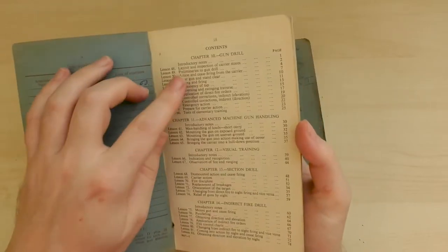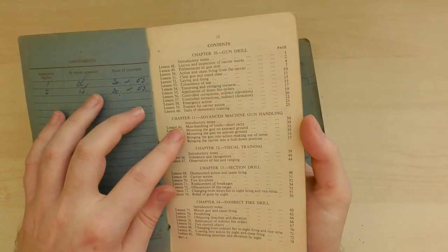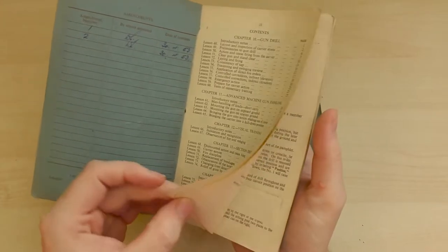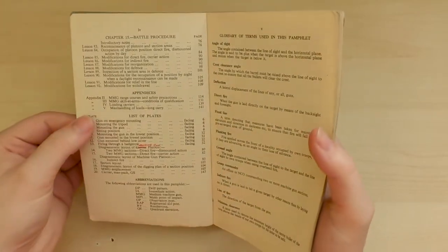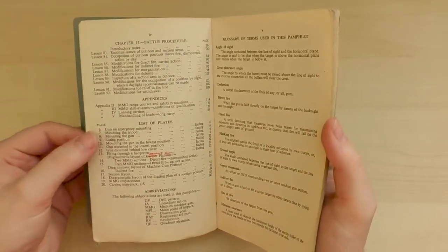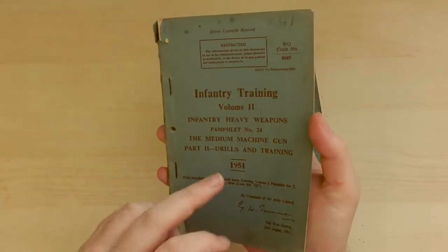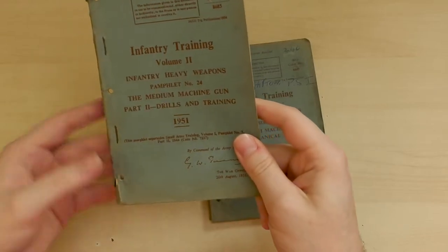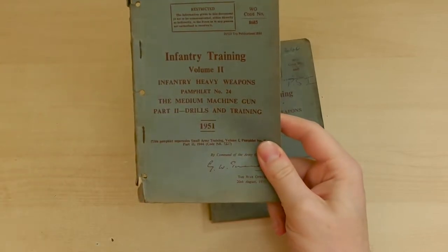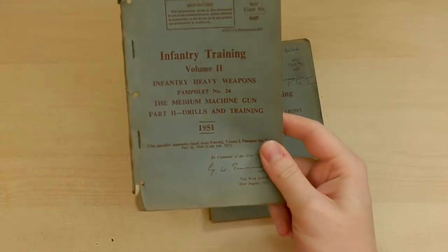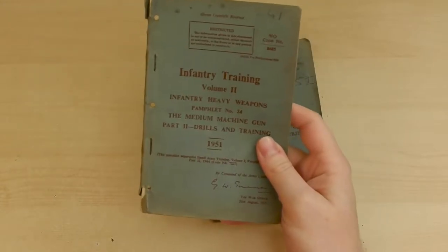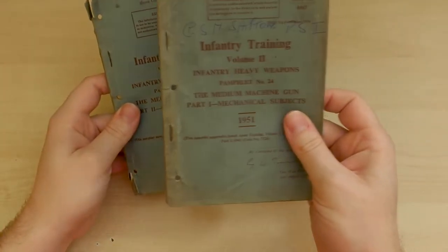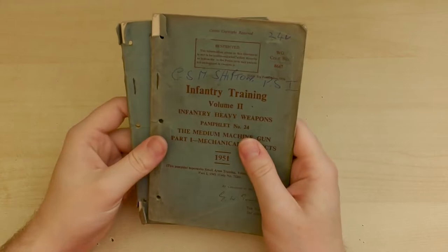So, in this one we have gun drills, advanced machine gun handling, visual training, section drills, indirect fire drills, battle procedure, and then some appendices as well. This was printed in 1951. So, this is around the time of the Korean War. I think I'm right in saying that at this point the British Army was basically relearning some of the lessons lost after World War II. That's really nice to have in the collection.